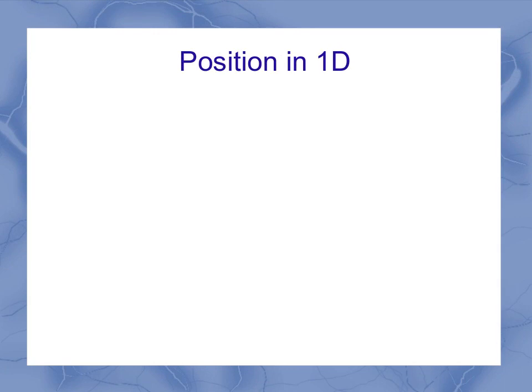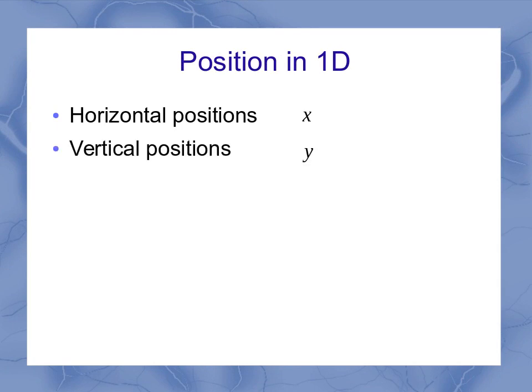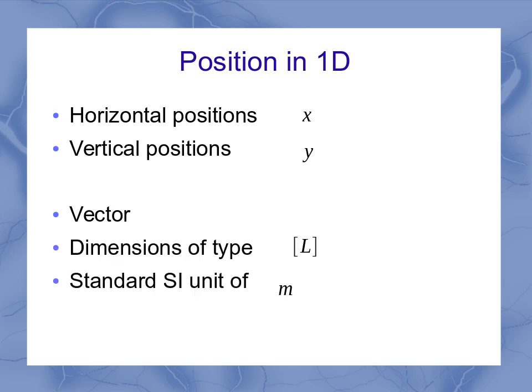Reviewing position in one dimension: that was motion or position along a line. We had either horizontal positions or vertical positions, but only one of those two cases. Either case was a vector because it mattered whether it was positive or negative. They had dimensions of type length, which means a standard unit of meters.